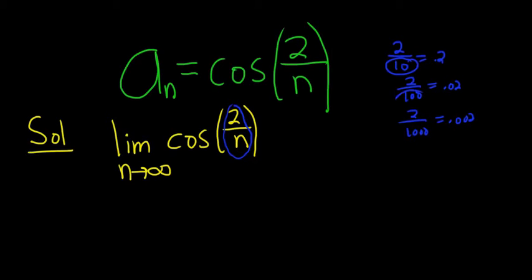So as the bottom gets bigger, the fraction gets smaller and smaller. So this approaches the cosine of 0 because 2 over n approaches 0 as n approaches infinity.